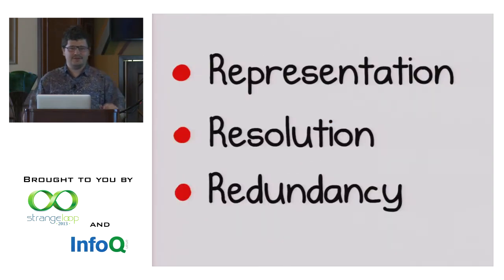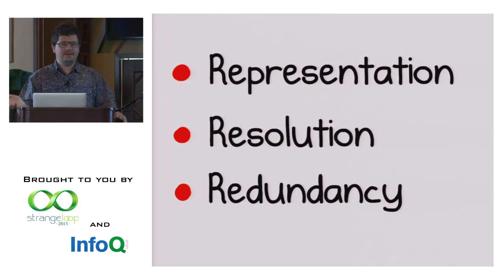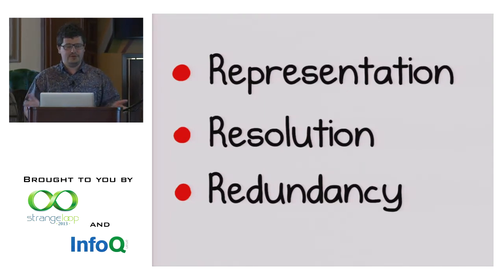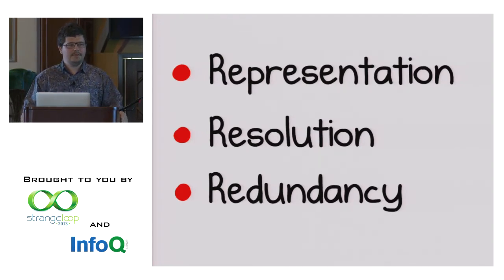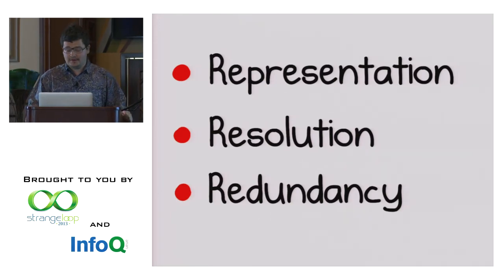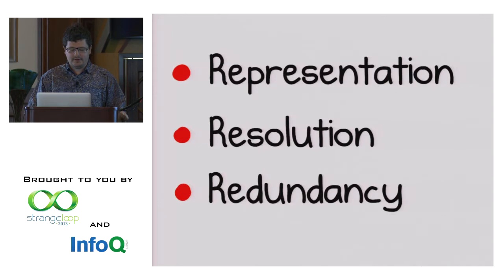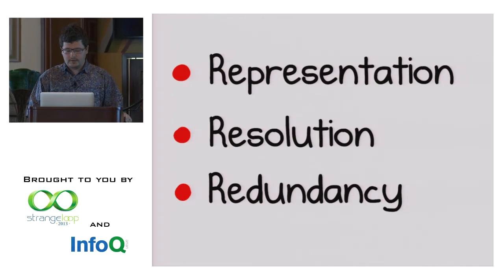All the problems with dynamically typed languages can be divided into three categories. One is finding the most efficient representation for your values or objects — memory efficient and execution efficient. There is the problem of resolution because everything is late bound, so you need to find a way to quickly resolve properties and methods. And there is the problem of redundancy: if you resolved the same thing twice, can you reuse the first resolution? I will mostly be talking about the last two because that's what the optimizing compiler deals with.